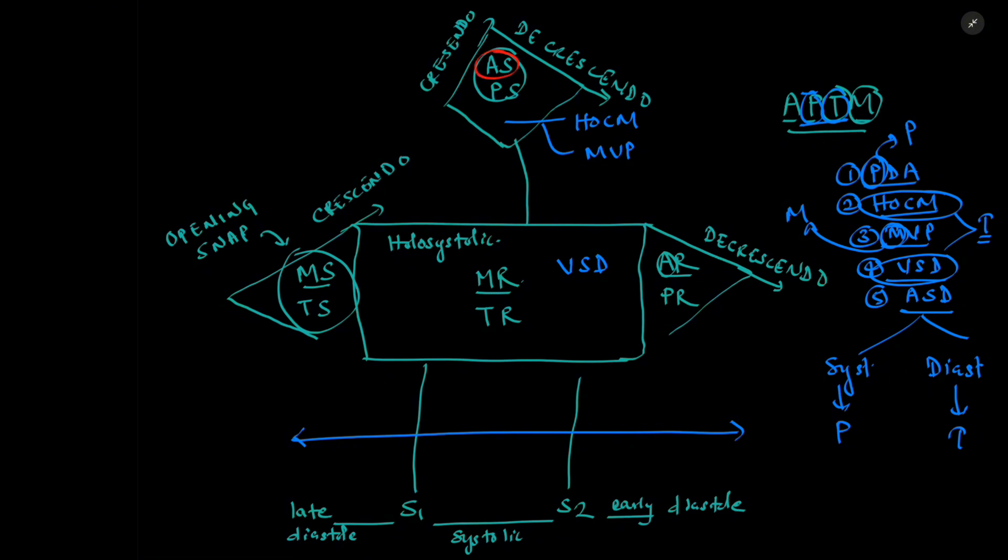And let's also talk about the radiation of these murmurs. So the aortic stenosis will radiate towards the neck. So from the head, it will go towards the neck. And this mitral regurgitation will radiate towards the axilla, from the trunk to the axilla.